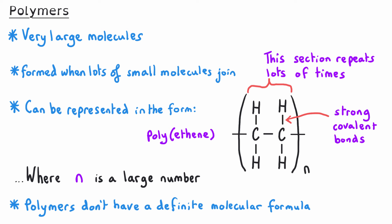We finish representing a polymer by placing a small n outside the brackets in the bottom right, representing the number of times the repeat unit repeats itself — a very large but unspecified number. As a result, polymers don't have a definite molecular formula since all polymer chains are constructed the same way but are different lengths. For polyethene, the molecular formula is written as (C2H4)n, where C2H4 is the formula of the repeat unit and n indicates it repeats a huge number of times.